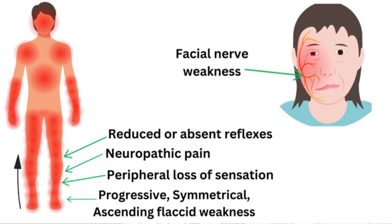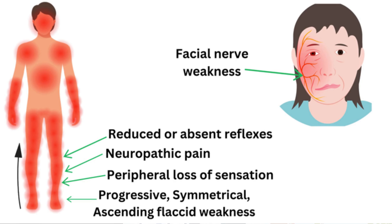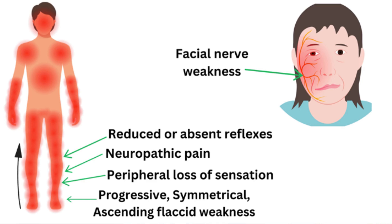Guillain-Barré syndrome presents with a progressive, symmetrical, ascending flaccid weakness which usually starts from the feet and moves up the body. There may be peripheral loss of sensation or neuropathic pain. There is reduced or absent reflexes because it is a peripheral neuropathy. It may progress to the cranial nerves, resulting in a facial nerve weakness.